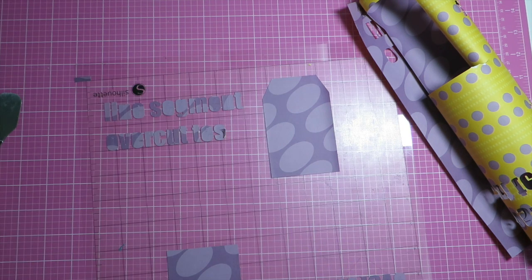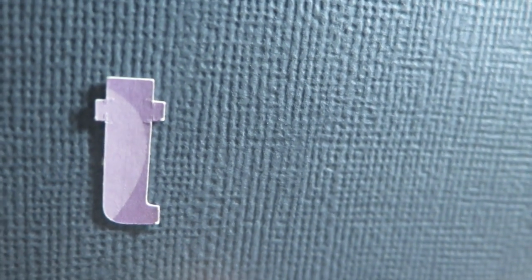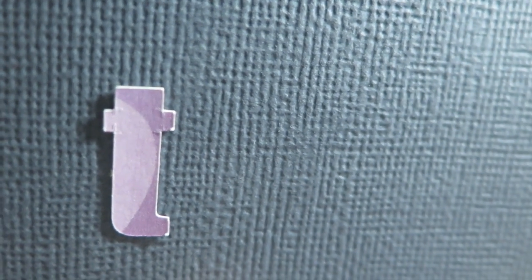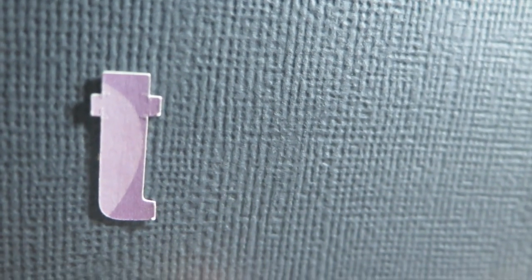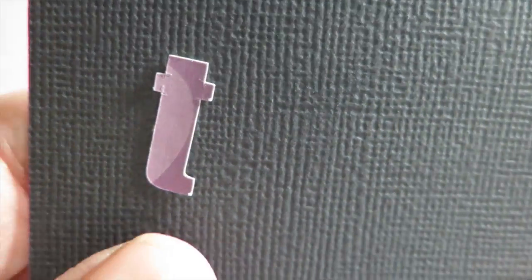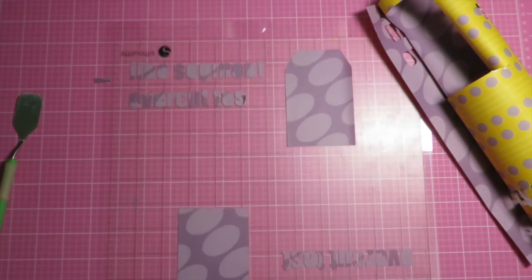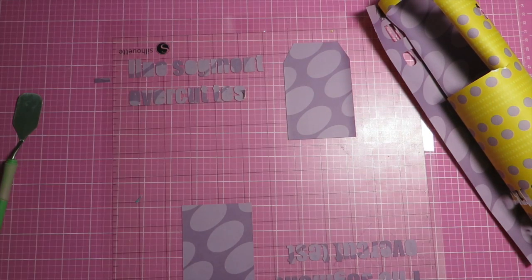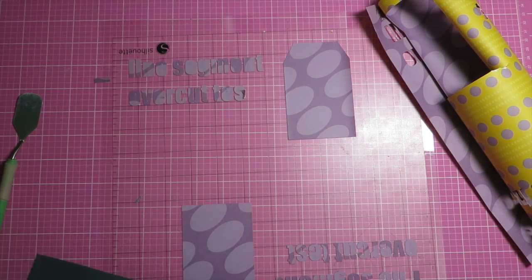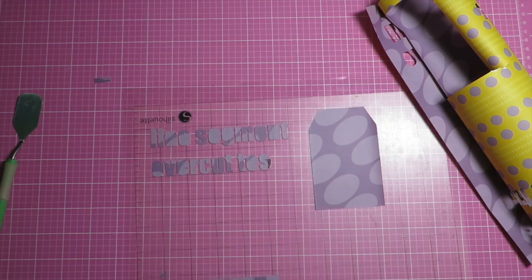Now the only thing is that when you use that overcut setting, I'm going to try to show this to you. Here I'm showing you the detail of that T, and you can see that inside the T there are cut lines that you wouldn't want. So for text, you have to decide whether you would want that or not. And as you saw, the text pulled away without the overcut setting turned on in my first example. So you may not want to use it for text, but for whenever you have a cut that has straight lines, it can help you with that.